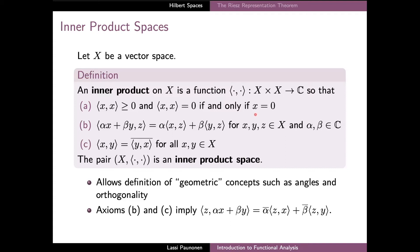The second axiom requires that if the second component of the inner product is a fixed vector zeta, then the inner product is linear in the first component. And finally, the third axiom requires that reversing the order of the elements in the inner product has the effect of changing the value of the inner product to its complex conjugate.